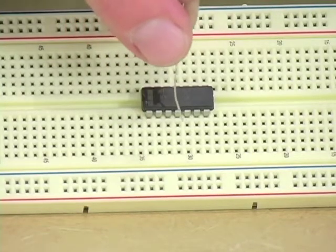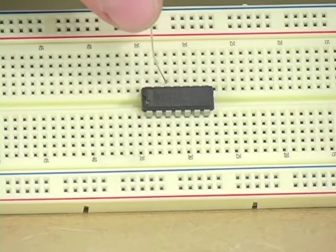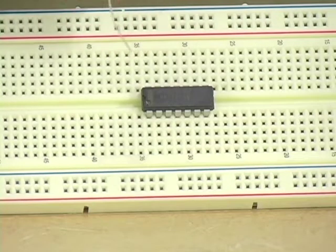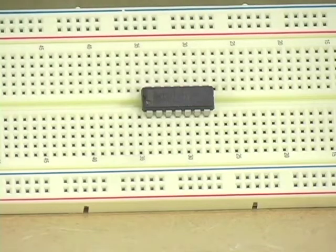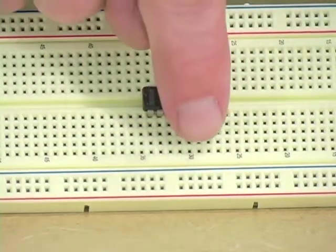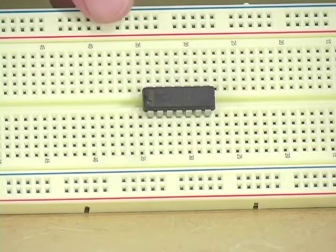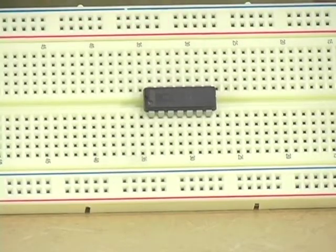The way the numbering works on a chip, it goes one, two, three, four, five, six, seven, over to here eight, nine, ten, eleven, twelve, thirteen, fourteen. This chip has fourteen pins. The power supply connections are at the opposite corners. Pin seven goes to ground. Pin fourteen goes up to plus voltage. In order to make that connection, we have to make a little jumper out of wire.